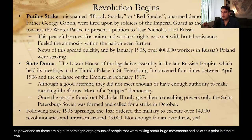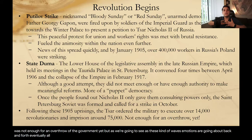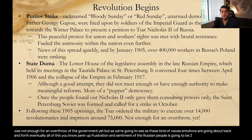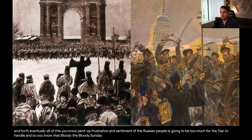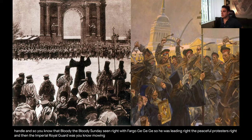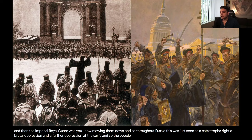At this point in time, it was not enough for an overthrow of the government yet. But as these waves and motions go back and forth, eventually all of this pent-up frustration and sentiment of the Russian people would be too much for the Tsar to handle. That Bloody Sunday scene with Father Georgi — he was leading the peaceful protesters, and then the Imperial Royal Guard was mowing them down. Throughout Russia, this was seen as a catastrophe — a brutal further oppression of the serfs.